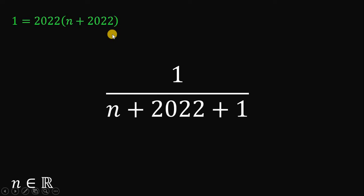Next thing to do is to divide both sides by 2022. Now we have a value for N plus 2022.